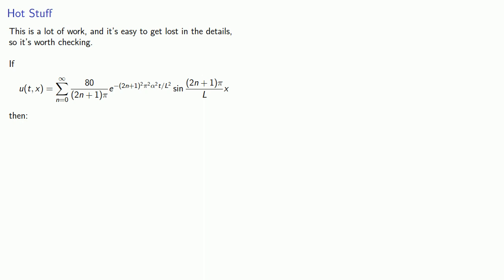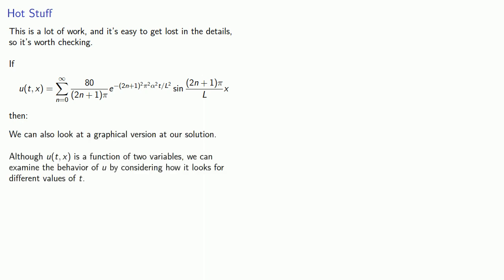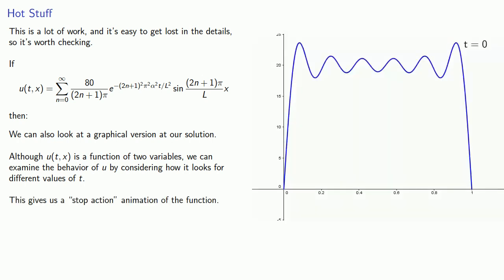And finally we can also take a look at a graphical version of our solution. Although u of tx is a function of two variables, we can examine the behavior of u by considering how it looks for different values of t, and this will give us a stop action animation of the function.